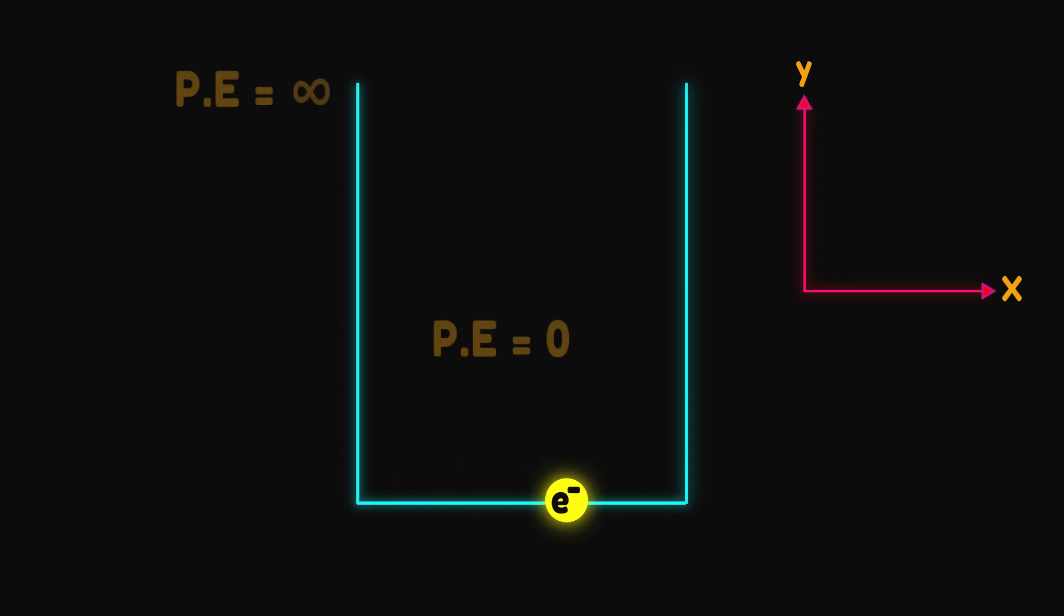For simplification, consider an electron moving around the x-axis in a one-dimensional box. The potential energy of the electron inside the box is zero, but at the edges and beyond that is infinite. Since the potential energy cannot be infinite, movement of the electron is confined to the region within the box.